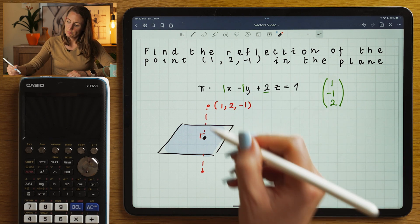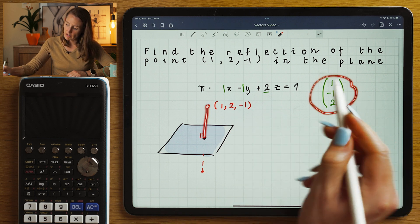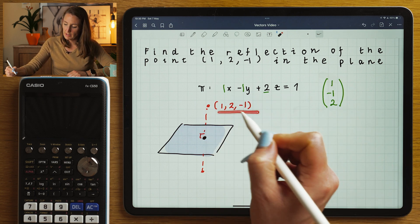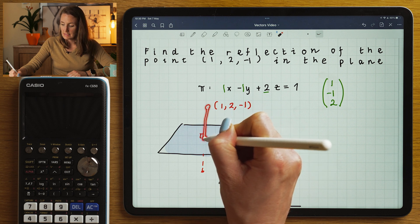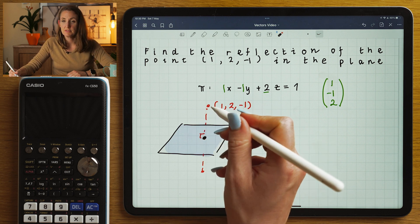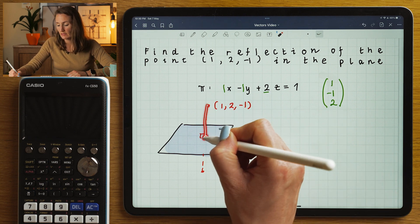So what am I going to do? I'm going to form this line by using this as my direction vector. And this is a point on the line. Then I'm going to think about where this line would intersect with this plane. Specifically, I'm going to think of which value of lambda, where this line intersects with this plane.